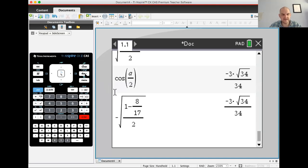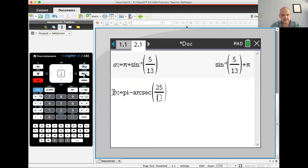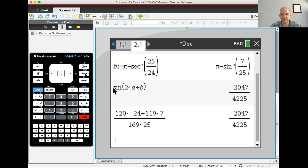I'm going to store everything, punch it in and see what the calculator gets. So a is in quadrant 3. So a equals pi plus arc sine of absolute value 5 over 13. And b is in quadrant 2. So I'm going to do pi minus arc secant of 25. So I'm trying to find the sine of 2a plus b. 120 times negative 24 plus 119 times 7 over 169 times 25. Negative 2047 over 4225. And that should be it.